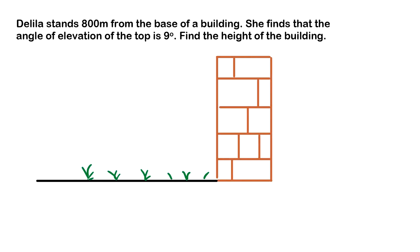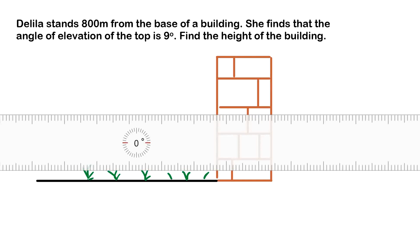Delilah stands 800 meters from the base of a building. She finds that the angle of elevation of the top is 9 degrees. Find the height of the building. Sometimes these involve creating a diagram, so I've started one here and we need to finish it by making a triangle and writing where our angle of elevation is. Since the angle of elevation means Delilah is looking up...